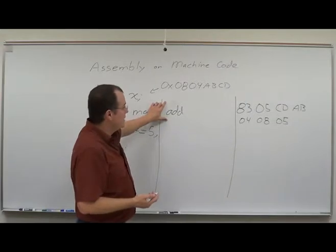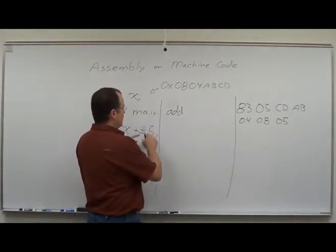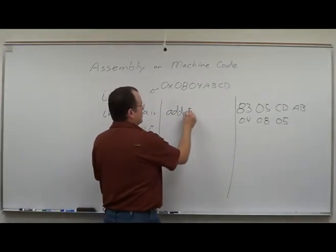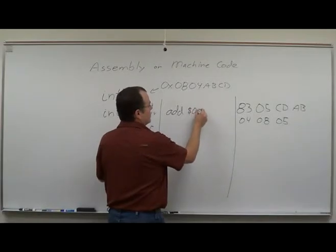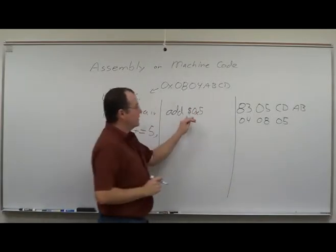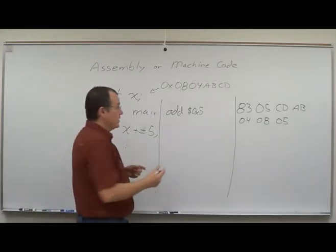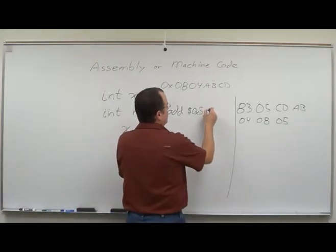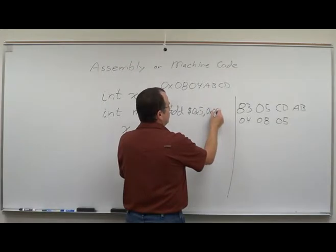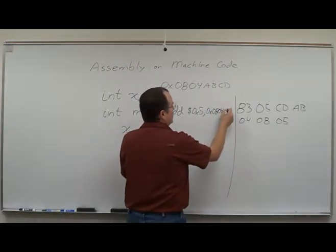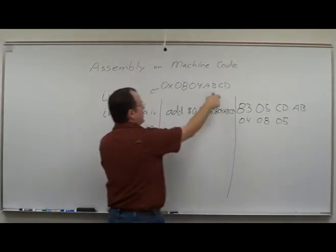So the way this will look in the AT&T assembly is I want the literal value 5, which we bring with a dollar sign. The dollar sign says 5, not the thing at address 5. And then we give it the address 0x0804abcd, that address right here.